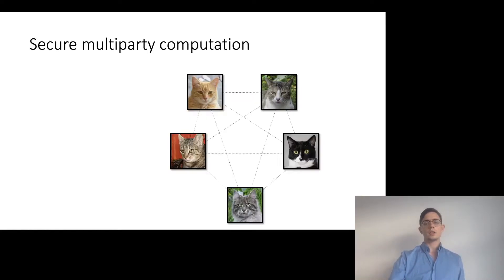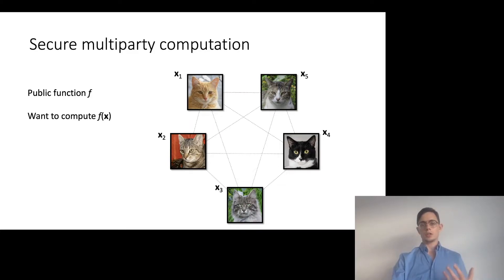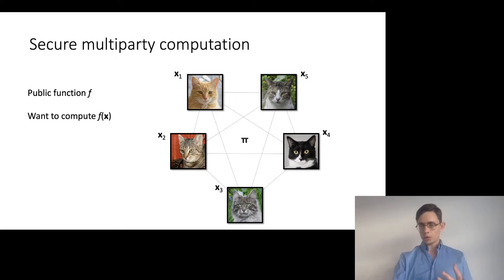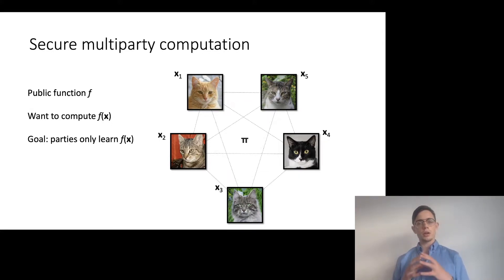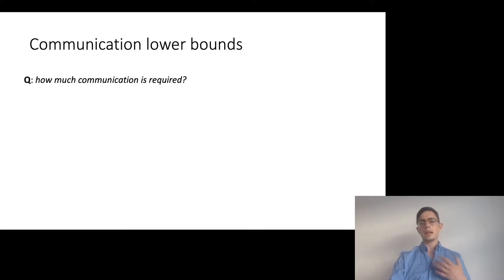In this talk we consider a setting in which a group of parties want to compute an agreed-upon public function f. Each of the parties hold a private input, and the parties want to compute the function on their inputs. They do so using an interactive protocol with the following security guarantee: the parties learn nothing about the inputs of the other parties other than that which could have been gathered from the function output itself. So the question that we ask is, in this setting, how much communication is required by the parties?